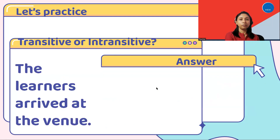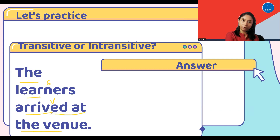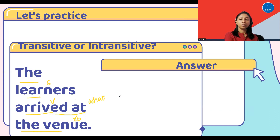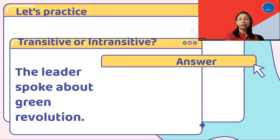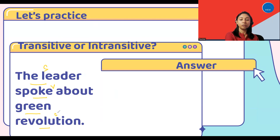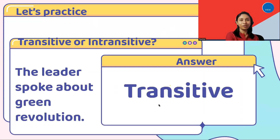The learners arrived at the venue. The learners is the subject, arrived is the verb, and the venue is the object. Asking 'The learners arrived at what?' gives us the answer: the venue. So since we get an answer to 'what,' this is a transitive verb. Next: The leader spoke about green revolution. The leader is the subject, spoke is the verb, and green revolution is the object. Spoke is a transitive verb because it gives us an answer to 'what.'